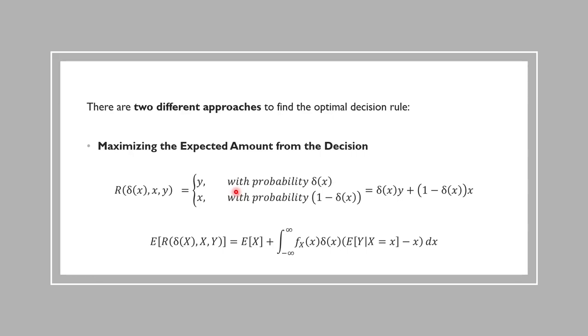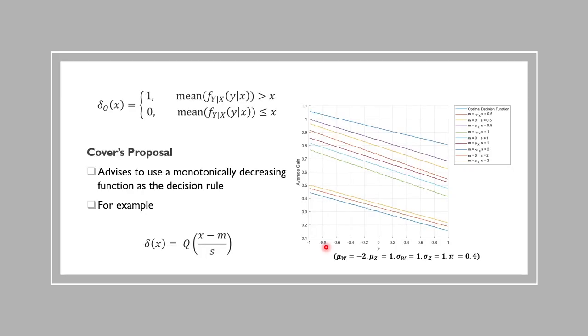When we take the expectation of the gain function, we see a similar case to that of the first approach. We have a term which is changeable, and a term which is not changeable by the decision rule delta. The optimal rule, which minimizes the expectation, is given here. It simply states that, if the mean value of this conditional pdf is greater than the observation, switch, and don't switch if this condition is not met.